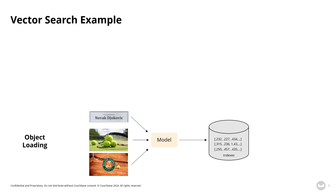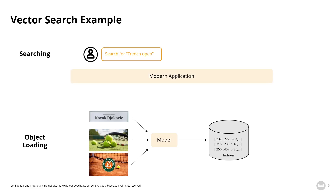Here we have an example using tennis-related objects. You can build a natural language search mechanism into your application, allowing users to ask things like 'French Open.' The application can enforce a distance parameter, which basically sets how similar the results you want to return are, which then goes to the database to retrieve those results.